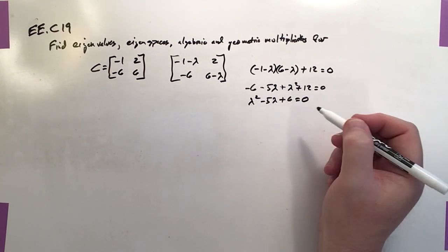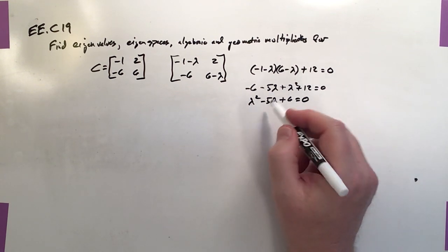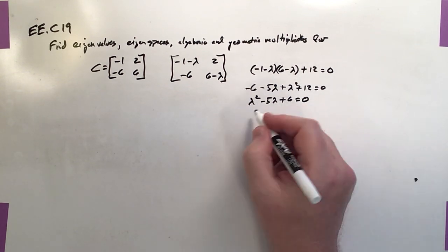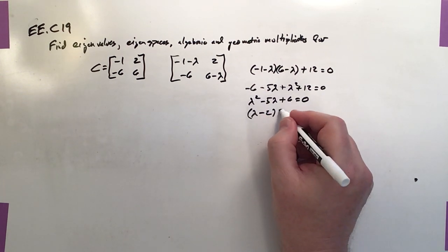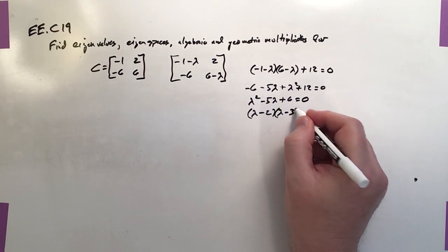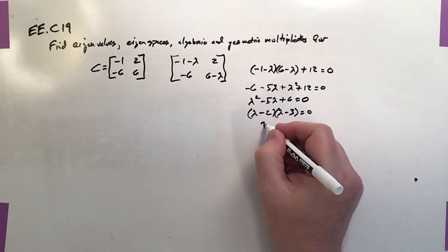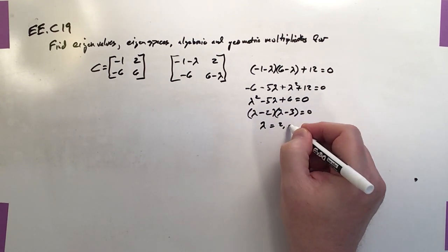And fortunately, this one's easily factorable. That's what we hope for - we don't want to have to use the quadratic formula. But this one factors easily into lambda minus 2 times lambda minus 3 equals 0, and that provides roots of lambda equals either 2 or 3.